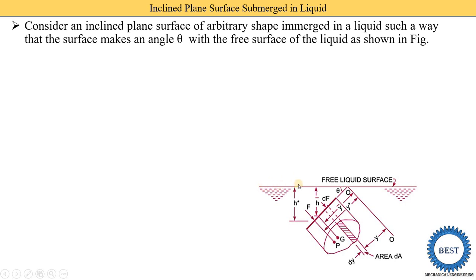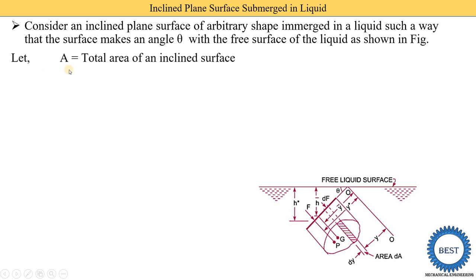In this diagram, this is the free liquid surface and this is our inclined plane surface. The inclined plane surface makes an angle theta with the free surface of the liquid, and the top view of this inclined plane surface is also shown. When viewed from the front, it looks like one line. We consider A as the total area of the inclined plane surface, which may be of arbitrary shape — rectangle, triangle, circular, or curved.